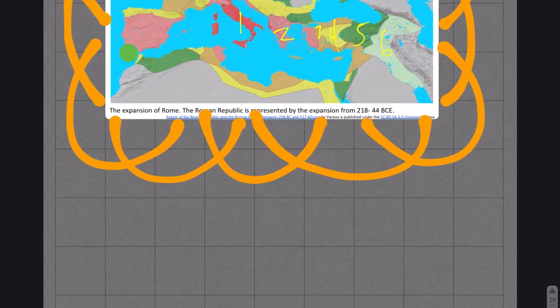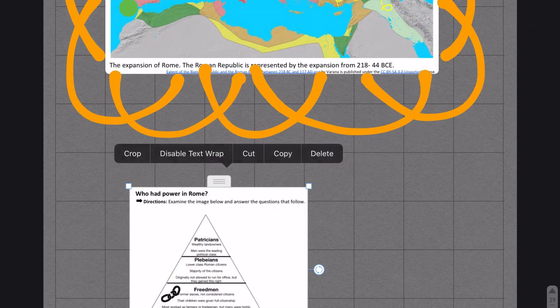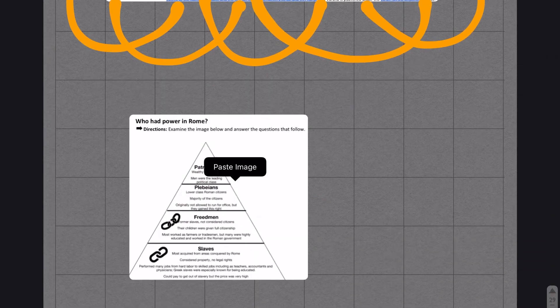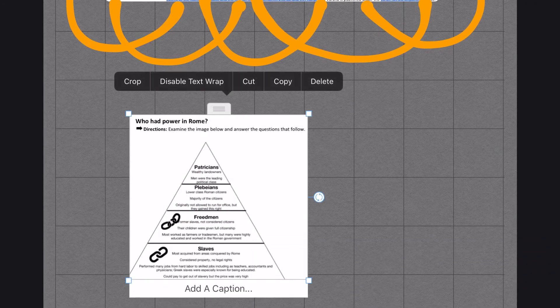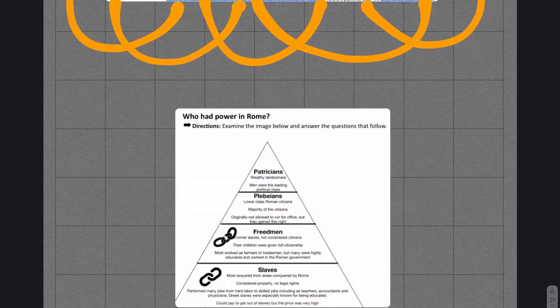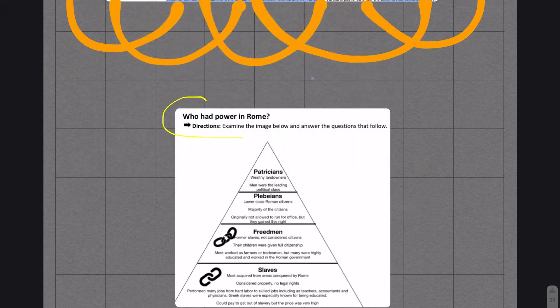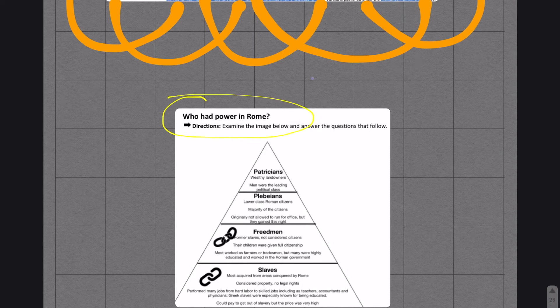I'm going to cut this one out for sure and I definitely want to add that to my notes. Underneath the map that we put here, I'm going to insert this diagram. I like how it has the title on there, like who has the power in Rome.